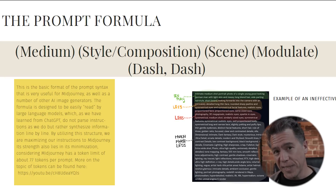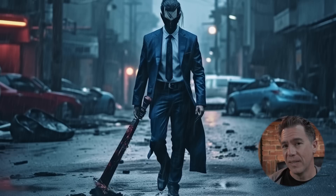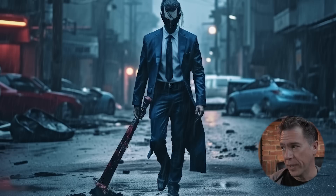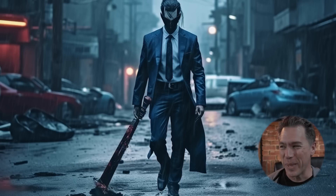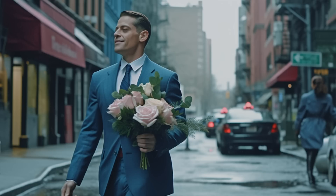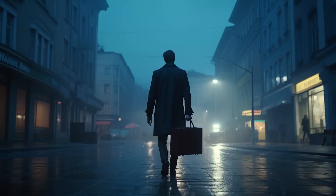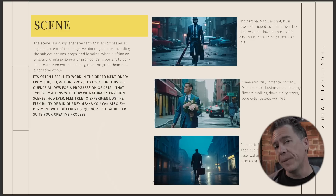The scene section is a pretty big one as it encompasses not only our subject, but any action, any props, and our location. For example, changing the prompt to: photograph, medium shot, businessman in a ripsuit holding a katana, walking down an apocalyptic city street, blue color palette — gives us an intense image. We also have: cinematic still, romantic comedy, medium shot, businessman holding flowers, walking down a city street — tone obviously has dramatically changed. Finally, cinematic still, crime film, businessman holding a briefcase gives a very Coen Brothers-esque shot. Manipulating the keywords within scene gives dramatically different results.